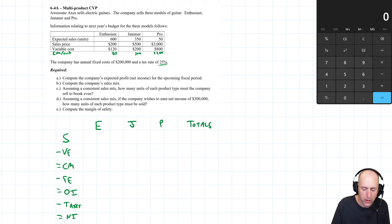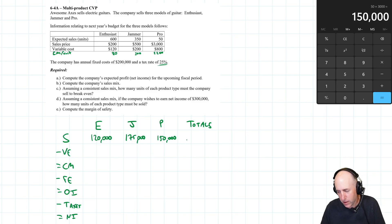Let's get to work. We're going to sell 600 enthusiasts at a price of 200 each - 600 times 200 is 120,000 worth of Enthusiast guitars. How about the Jammer? 350 times 500 is 175,000 worth of Jammers. The Pro? 50 times 3000 is 150,000 worth of Pros. My total sales here is 120 plus 175 plus 150, which is 445,000.